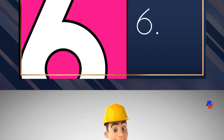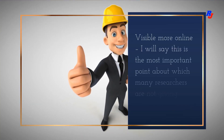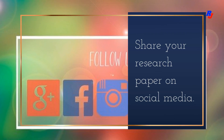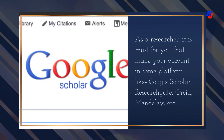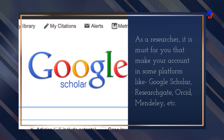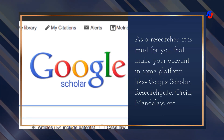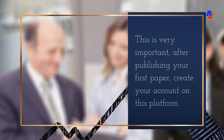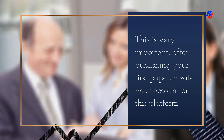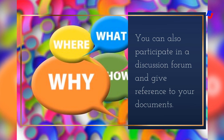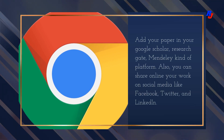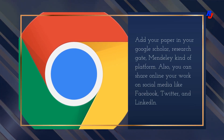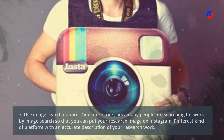Sixth point — be visible more online. This is perhaps the most important point, and many researchers are not giving it attention. Share your research paper on social media. Many platforms are available where you can be more visible with your research paper. As a researcher, it is a must to make your account on platforms like Google Scholar, ResearchGate, ORCID, and Mendeley. After publishing your first paper, create your account on these platforms. You can also participate in discussion forums and give references to your documents. Add your papers to Google Scholar, ResearchGate, and Mendeley.